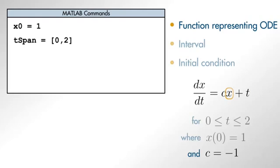Because of this, we can now represent the ODE as a function of two inputs. The first input represents the independent variable, and the second input represents the solution itself.